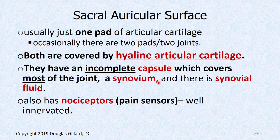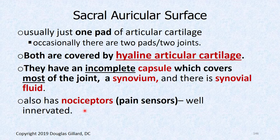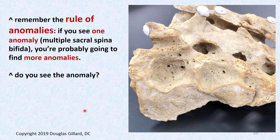Each auricular surface has a pad of articular cartilage — you could almost call it a facet. Another weird thing about the SI joint is that it has a capsule, like those around zygapophyseal joints or the knee, but it's incomplete posteriorly. It's an atypical diarthrodial joint: it has a synovial membrane, synovial cells secrete synovial fluid, but it has no posterior capsule. It is innervated and has nociceptors, so it can generate pain and may need to be manipulated.